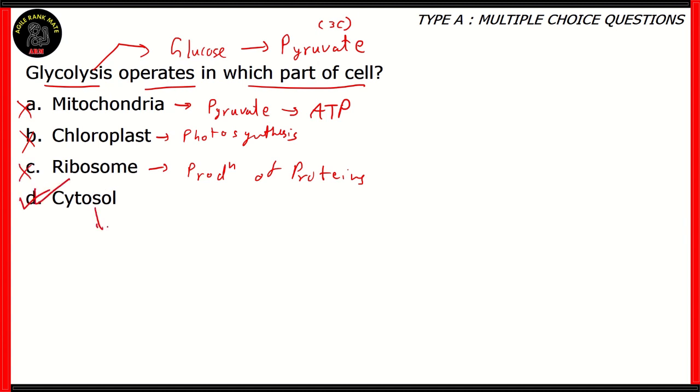The right answer is cytosol. Cytosol is another name for cytoplasm and it basically contains the liquid element of the cytoplasm. So cytosol is the place where glucose is converted to pyruvate, which means that glycolysis operates in the cytosol of the cell. So option D turns out to be the right option.